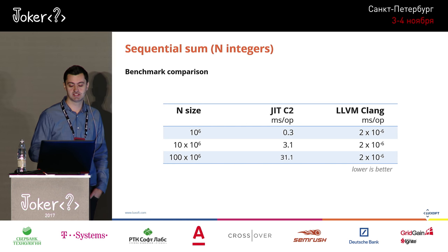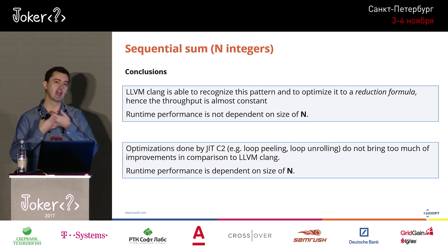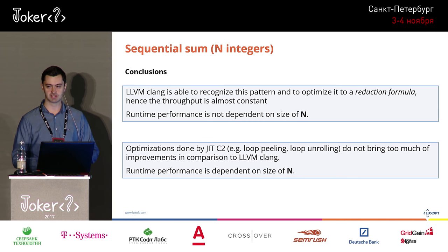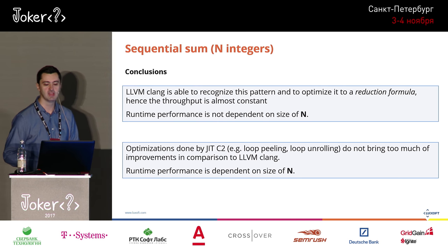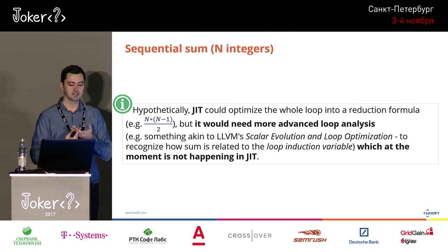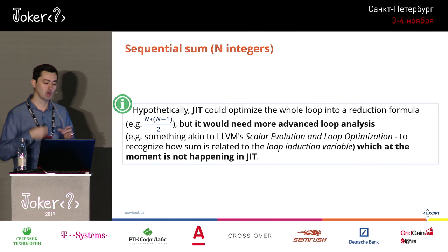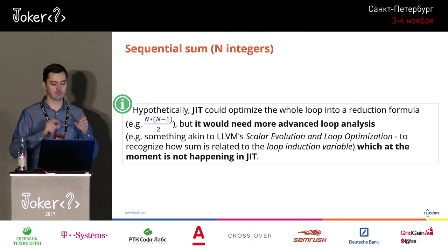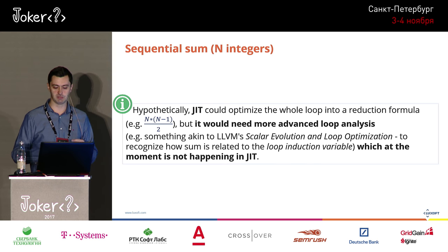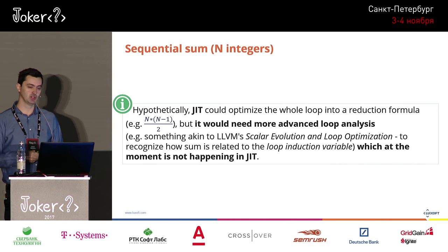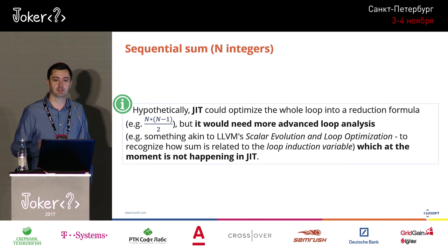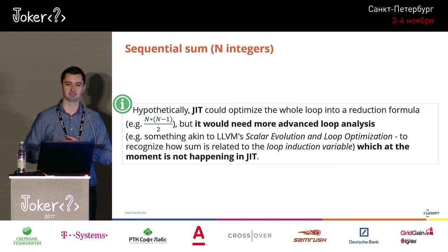In the benchmark, Clang is almost constant time and independent of N size, because it just copies N into a register and applies the reduction formula. In contrast, JIT C2 depends on N — larger N means lower throughput and higher response time. This raises the question: why can't JIT C2 do this optimization? Hypothetically it could, but in reality it would need more advanced loop analysis. In LLVM this is called scalar evolution and loop induction variable optimization — and to my knowledge, this optimization is not currently happening in JIT C2.